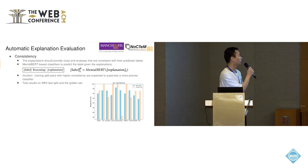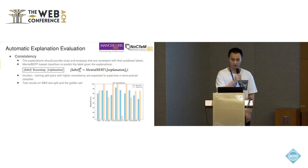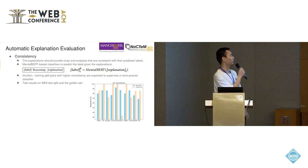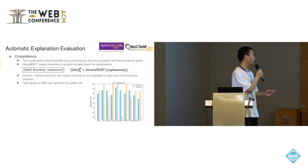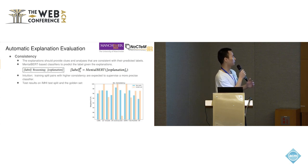The second aspect is consistency, which evaluates whether the explanations can provide clues and analysis consistent with the predicted labels. To evaluate consistency on each subset, we train a MentalBERT-based classifier to predict the label given the explanations. Because of the highly structured template of the output explanations, the labels and explanations can be easily separated for training. The intuition is that training split pairs with higher consistency are expected to supervise a more precise classifier. According to the results, they reach a very high weighted F1 score on most of the subsets, which proves the high precision and consistency of our original dataset.